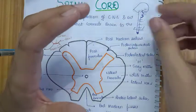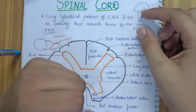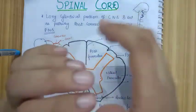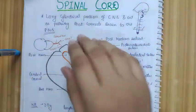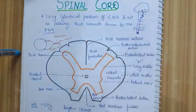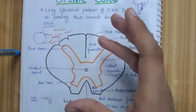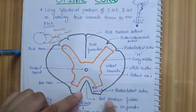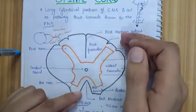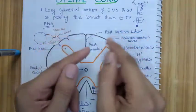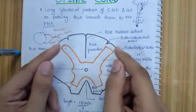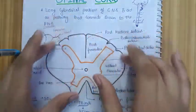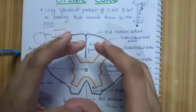A quick recap: the spinal cord is a long cylindrical portion of the CNS that connects the medulla to the conus medullaris. It is an important pathway connecting the brain to the peripheral nervous system. In cross-section, the spinal cord has an anterior median fissure, a posterior median sulcus, two posterior intermediate and two posterolateral sulci, with white matter situated peripherally and gray matter centrally.